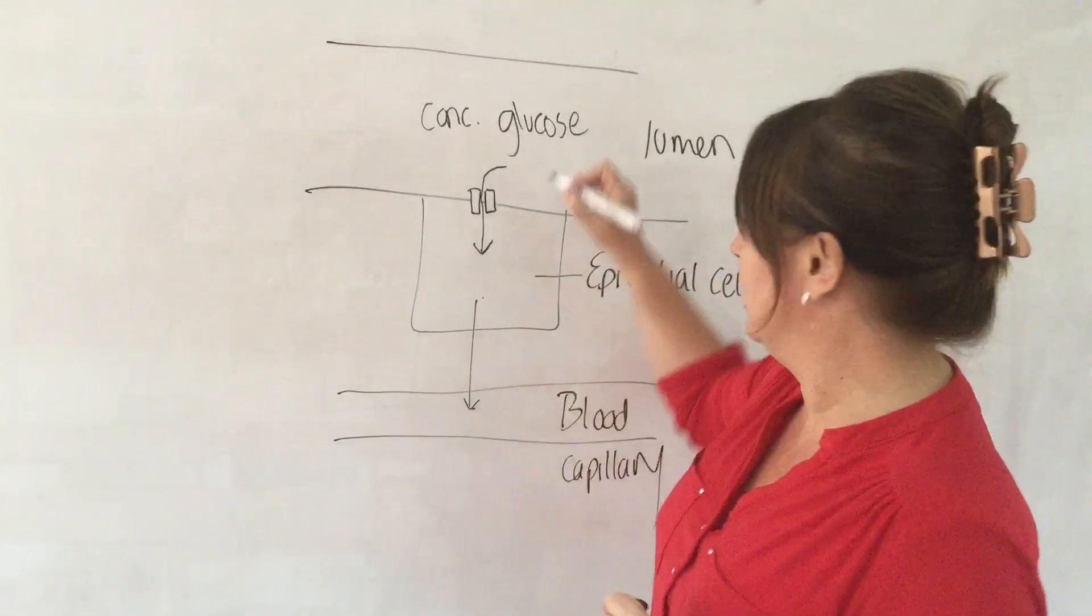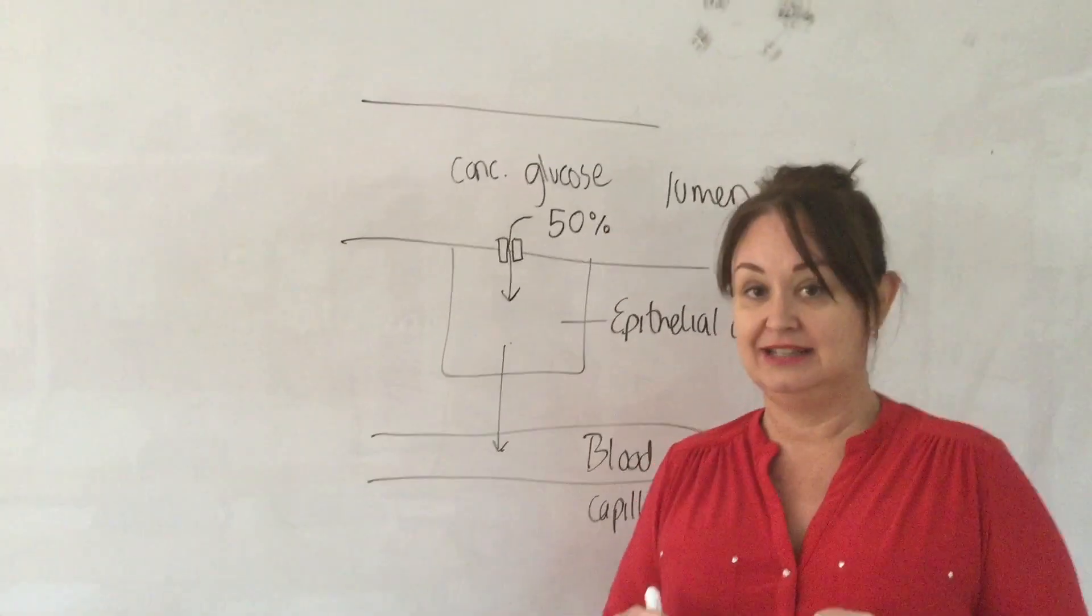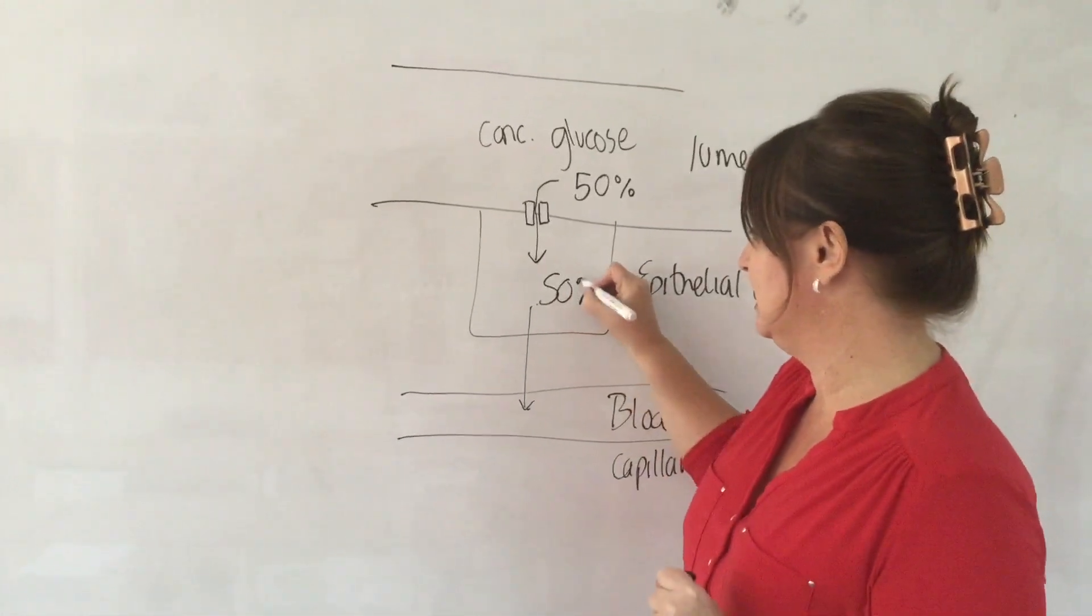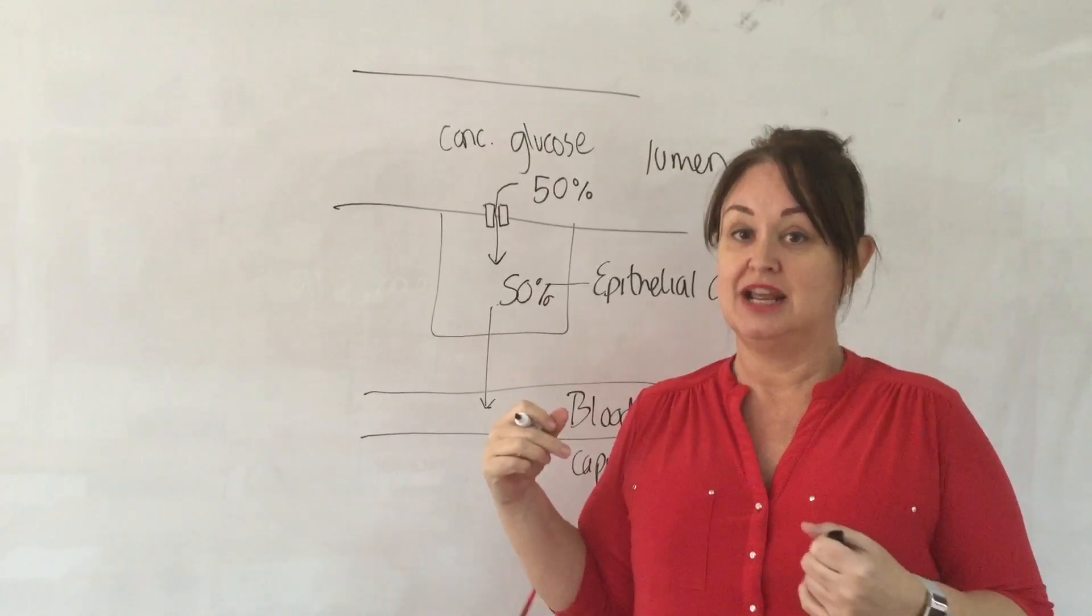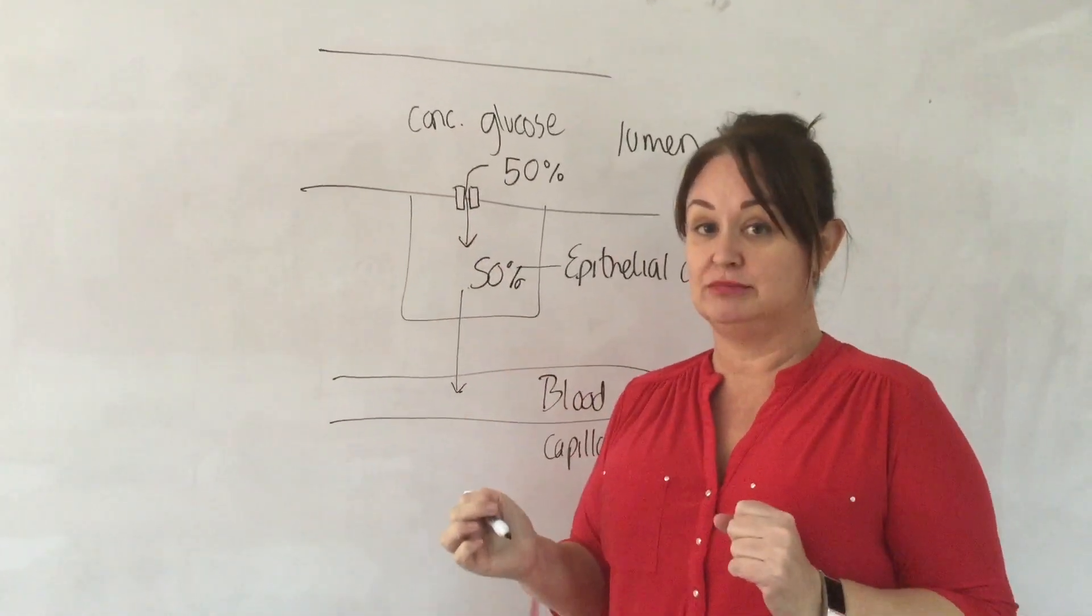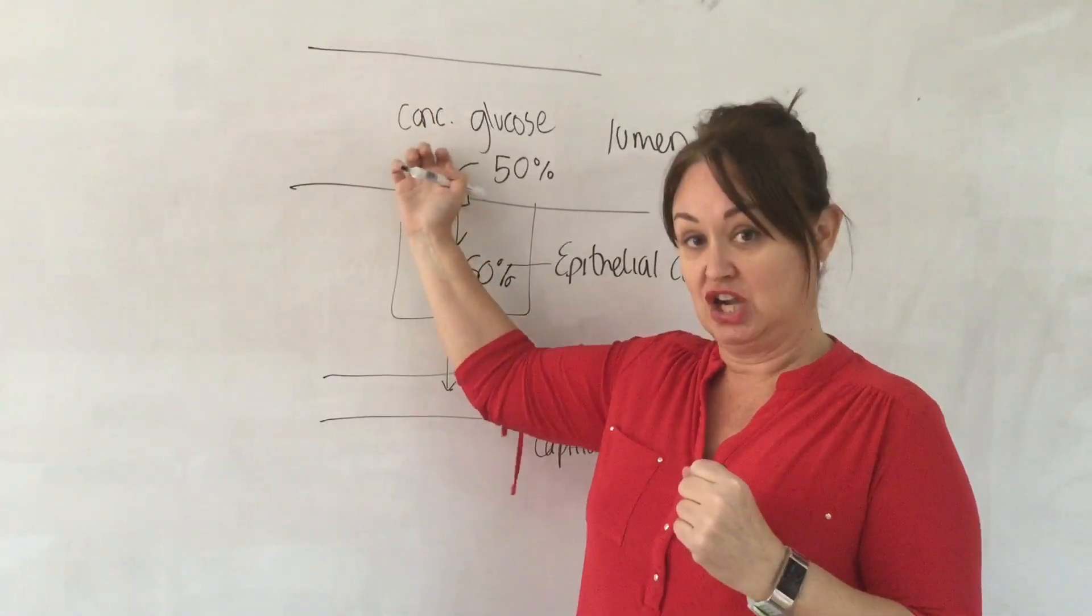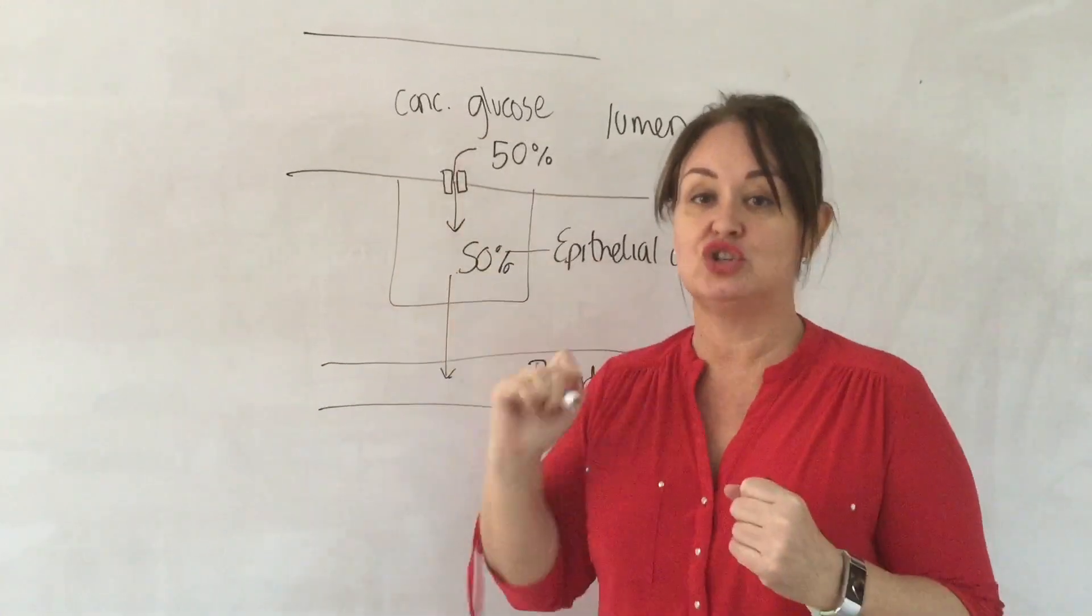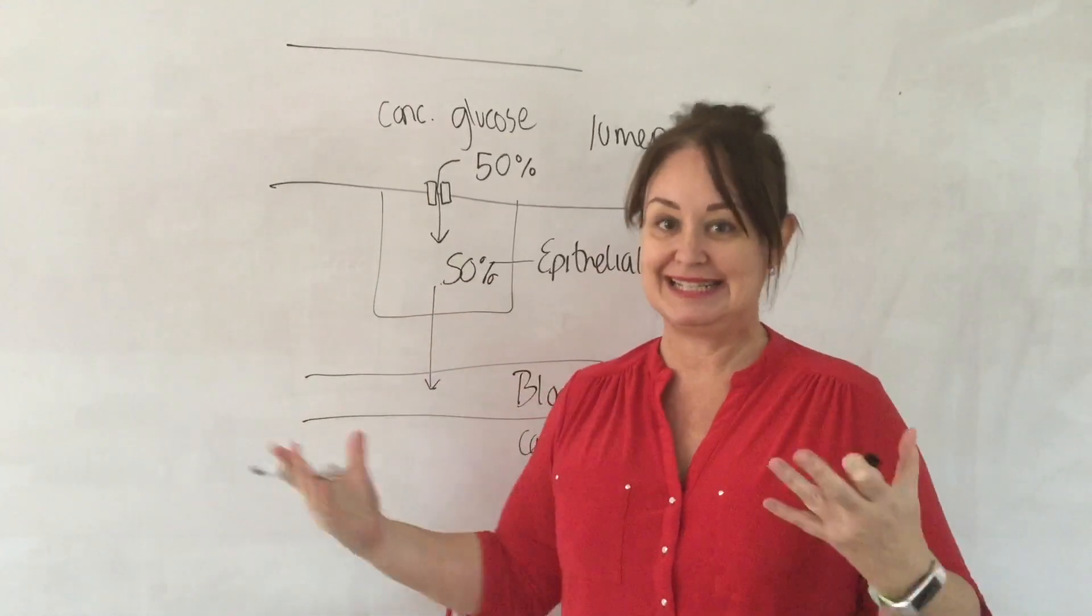But what happens when the concentration of glucose here is the same as the concentration of glucose in here? Imagine they're both at equilibrium, they're both at 50%. The transport by diffusion is then going to stop, and we need to absorb the rest of that glucose into the body, otherwise we're going to lose it.